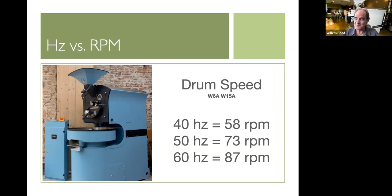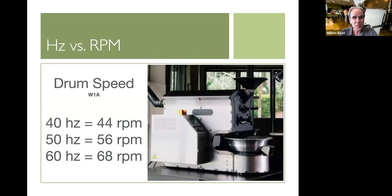And if we, I'll ask Marcus in a second for some input as well on his observations in this matter. But here we look at the drum speed of the W1A, which is the machine that we did our roast trials on for today's webinar. And you can see here, if I run my W1A at 40 hertz, it's 44 RPMs, 50 is 56 RPMs, and 60 is 68 RPMs. And so it correlates quite well with the other models of machines as well.